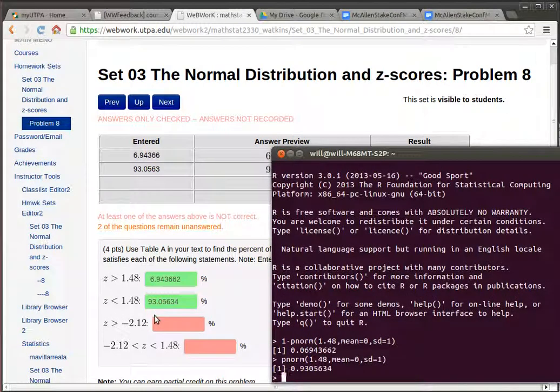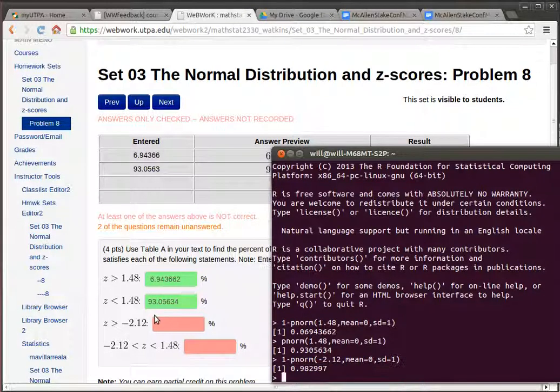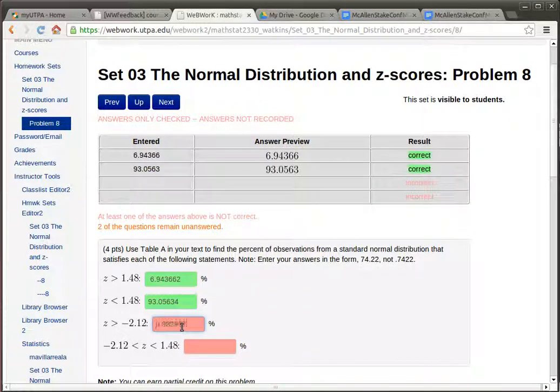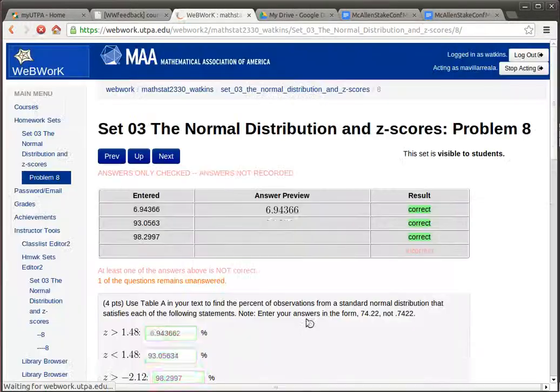And so to find this, Z is bigger than that, I want to have 1 minus a pnorm of negative 2.12 in a normal distribution that has a mean of zero and a standard deviation of 1. So I can just copy and paste that. And they want it as a percent, not as a fraction. So the decimal point has to move 2 to the right. So it's going to be a pretty high percentage, about 98%.